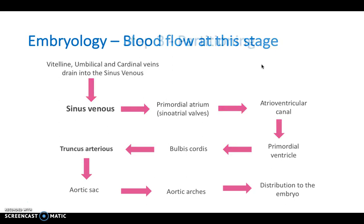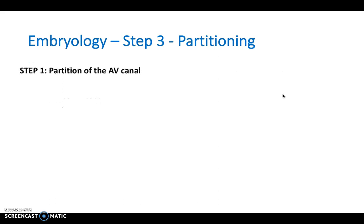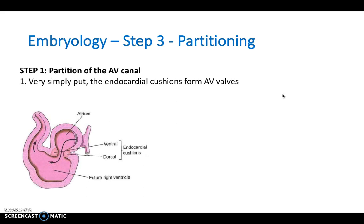Step three is partitioning, and there are three things we need to partition to form our four chambers of the heart: first, partition the AV canal; second, partition the atria; third, partition the ventricles.